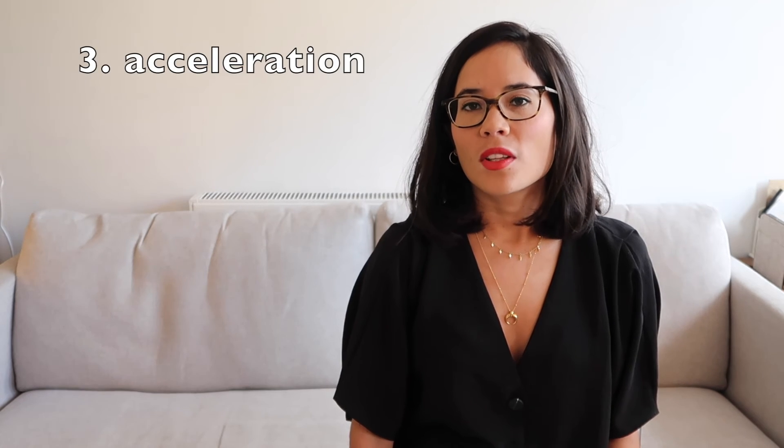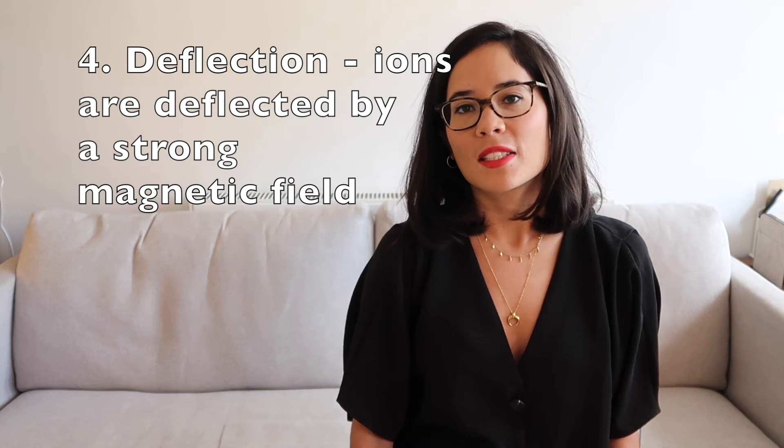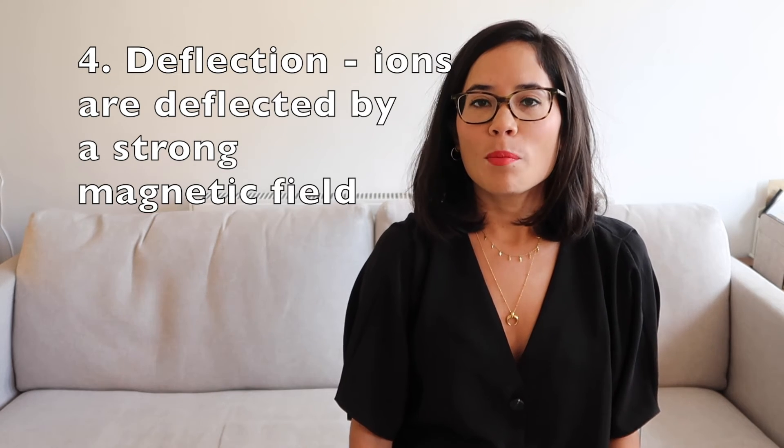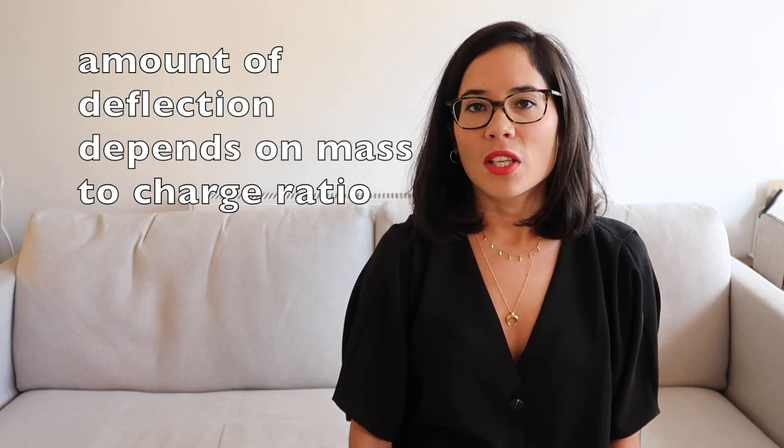In the third stage, the ions are accelerated so they speed up, and that's to ensure that they all have the same kinetic energy. The fourth stage is deflection, and as the ions pass by some magnetic plates they are deflected. Be aware of the amount of deflection—this is proportional to both the mass and the charge of the ion.